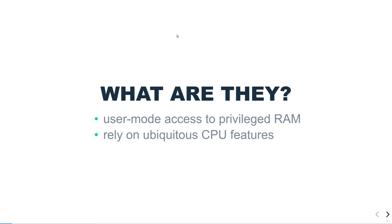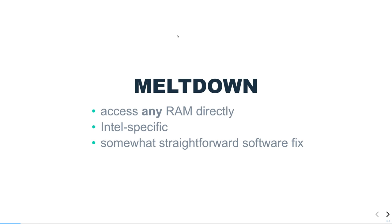Both of these attacks rely on features that have come into CPUs in the last 20 years. These features are ubiquitous — it's not just the Intel processor that is susceptible to these kinds of attacks, it is also ARM and indeed some mainframe processors have also been apparently vulnerable. Although one of the attacks we'll talk about is more specific to Intel. Meltdown allows you to access any memory inside the computer directly. It relies on an Intel-specific architectural feature, though some ARM processors are vulnerable as well. It has a somewhat straightforward software fix that has some impact but is otherwise relatively straightforward.